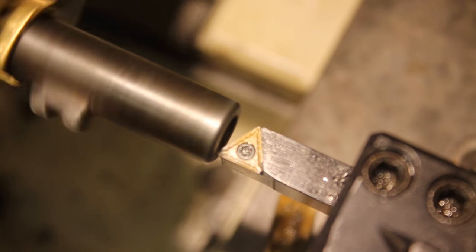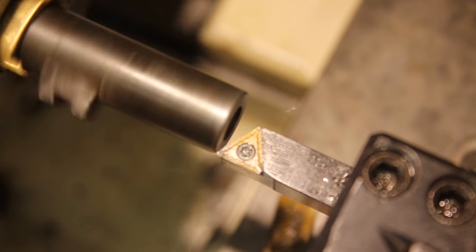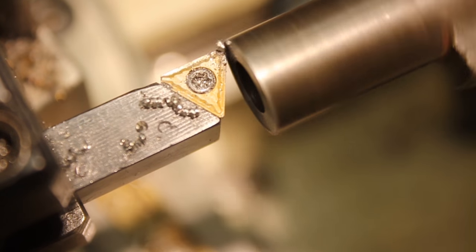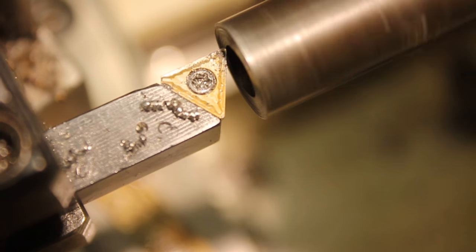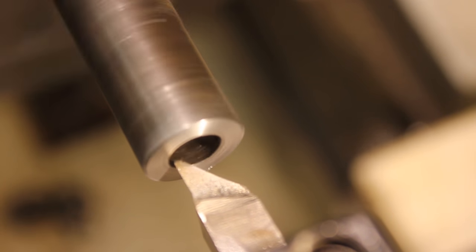A facing cut is made to the barrel to ensure that the work is starting from a flat surface, and to be sure all of the old crown is removed. It is important that the tools move from the inside out so that a burr is not rolled into the bore of the barrel.